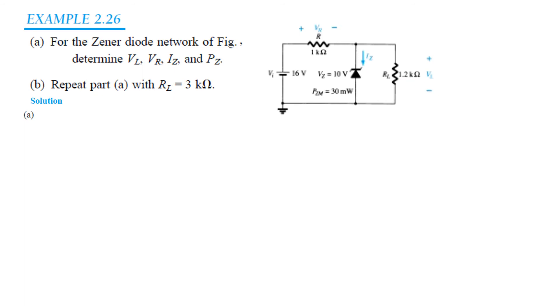This is the first part with 1.2 kilo and the second part we repeat with 3 kilo. So we follow the same technique. Remove the diode. Remove the Zener. So this becomes open.